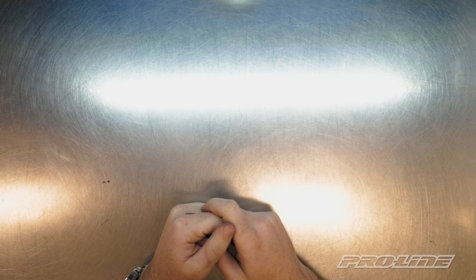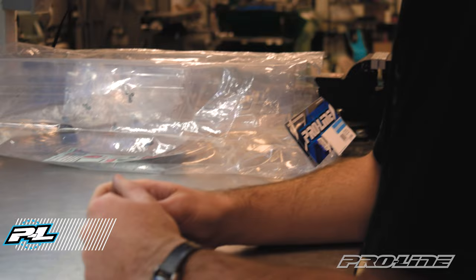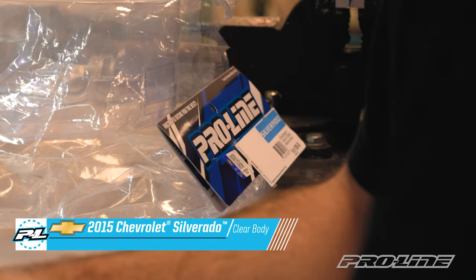Hey guys, Ian from Proline Racing here. Today we have the new 2015 Chevy Silverado Clear body for 13.9 inch wheelbase crawlers.